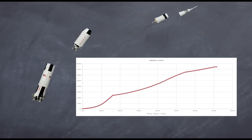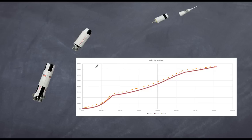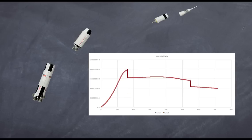Looking at the velocity graph — since acceleration is increasing, we expect velocity to increase as well. In the first stage, velocity is rising. At stage separation, there is no drop in velocity because the rocket already has momentum. When the next booster fires, velocity increases again. By around 700 seconds into the flight, the rocket is already traveling at approximately 7.5 kilometers per second, which is roughly the orbital velocity it needs to achieve.